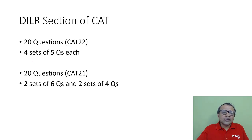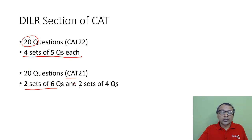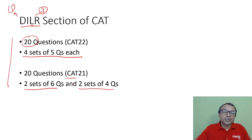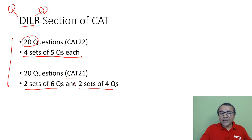If you look at the DILR section of CAT, in CAT 22 there were four sets of five questions each, total 20 questions. In CAT 21, there were two sets of six questions and two sets of four questions. The pattern is such that you have logic questions as well as DI questions in the exam. But if you look at the last two years, there have been one set of DI and three sets of LR logic. DI is important because the DI sets in both years were comparatively easier than the logic section, so it made sense to solve the DI section as well as the logic section.